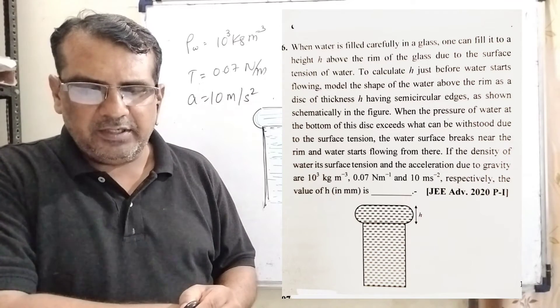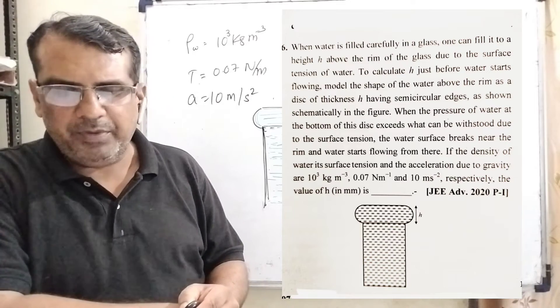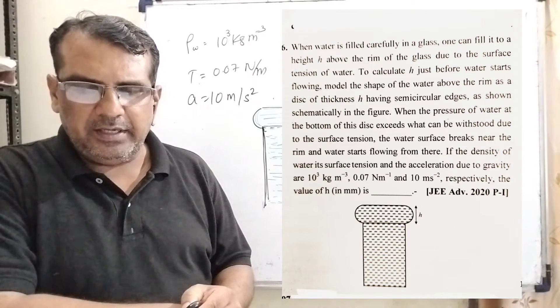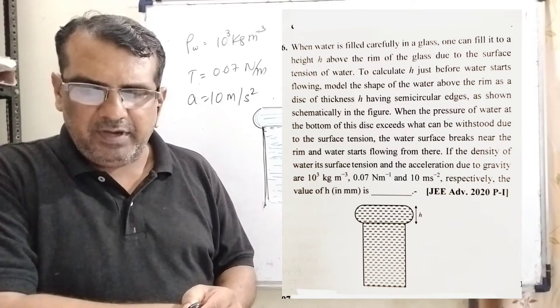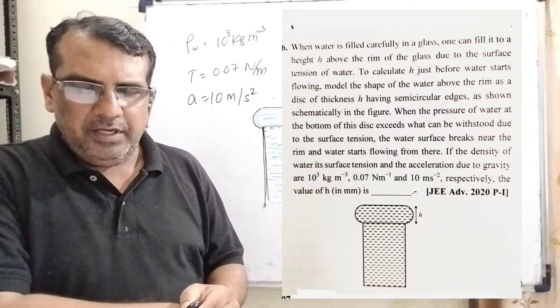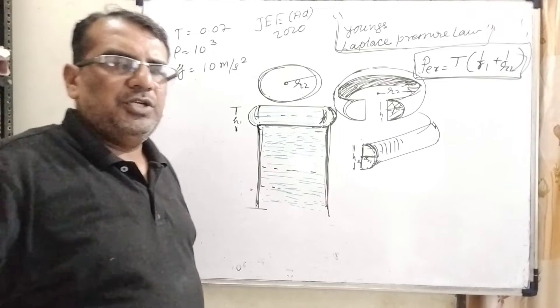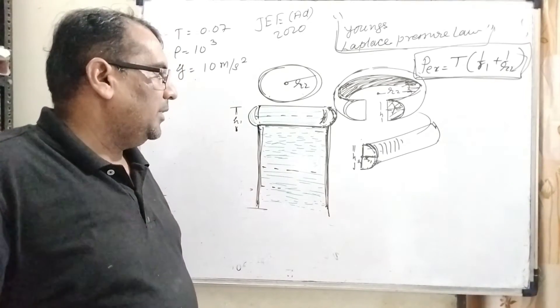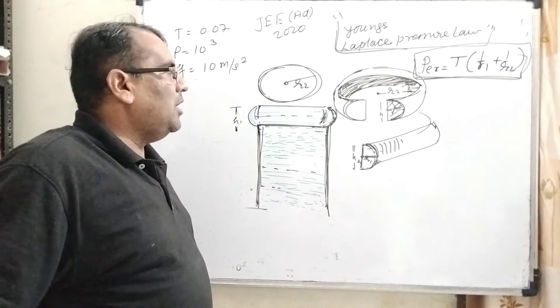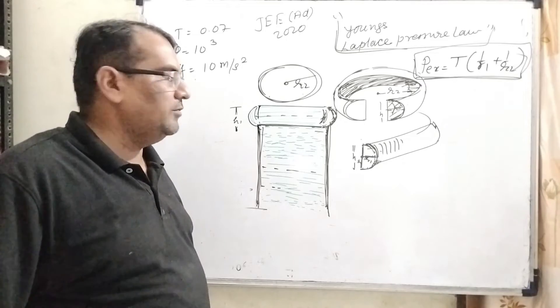If the density of water, its surface tension and the acceleration due to gravity are 10³ kg/m³, 0.07 N/m and 10 m/s² respectively, then what is the value of h in mm? This question is asked JEE Advanced 2020, and this question is totally based on Young's Laplace pressure law. Young's Laplace pressure law is based on excess pressure inside the curved surface.